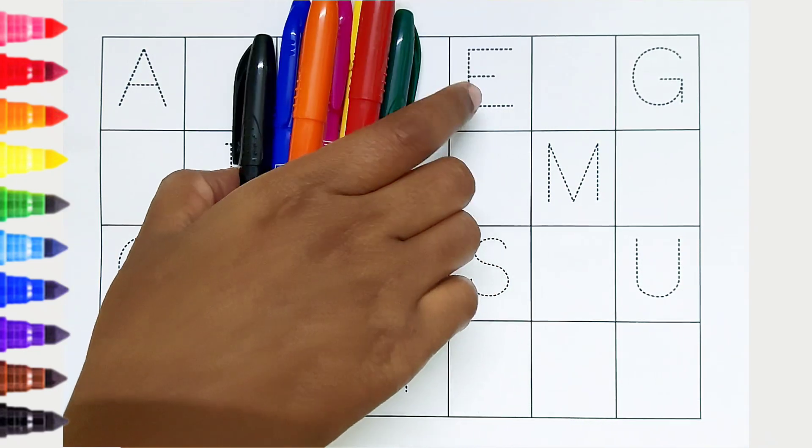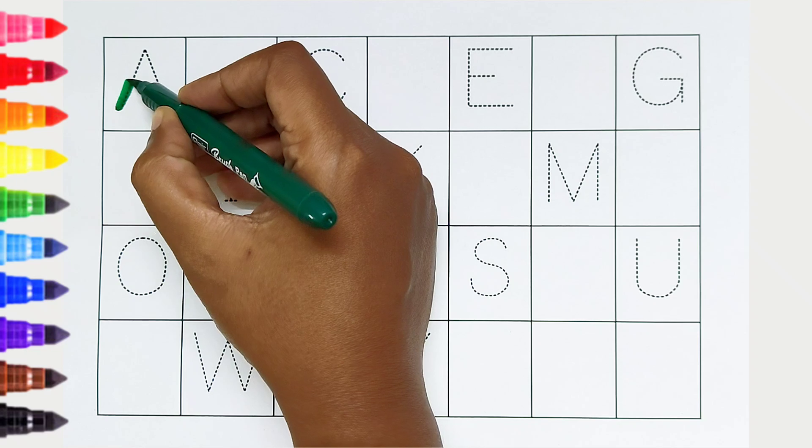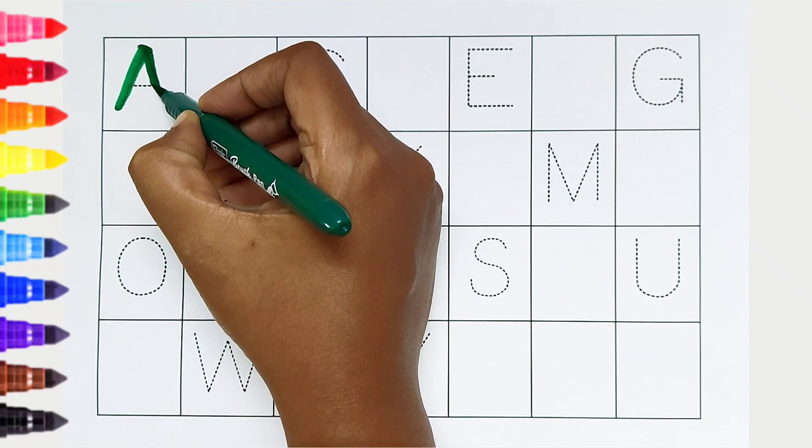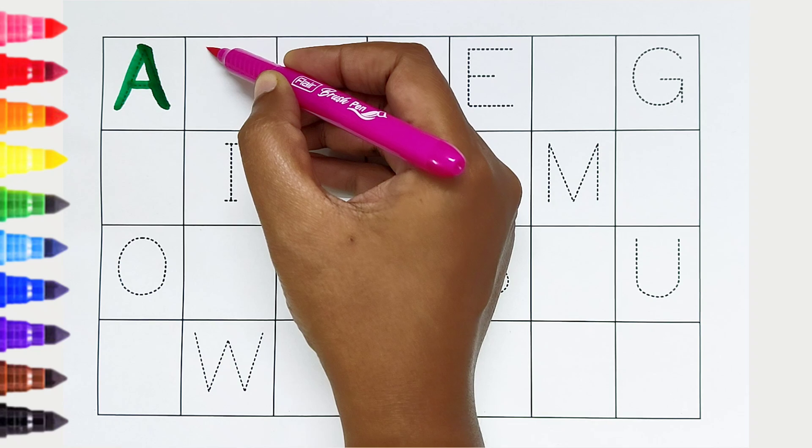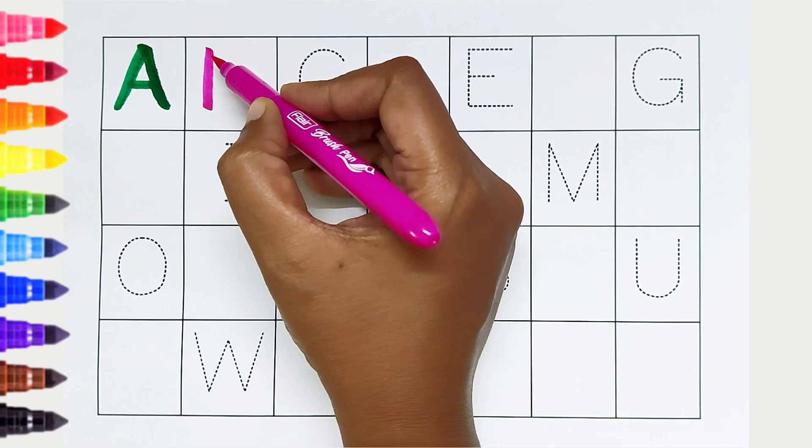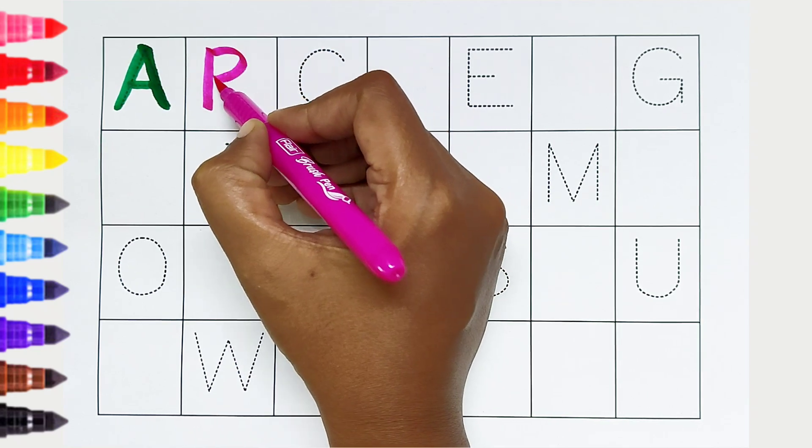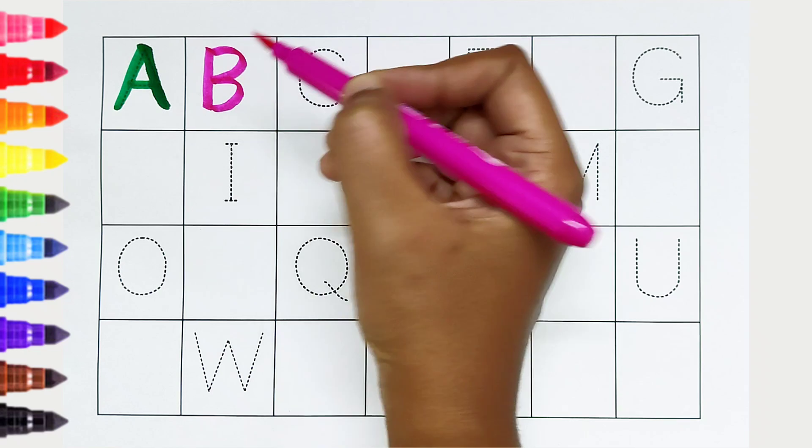Hi kids, today we can learn the alphabets from A to Z. A. Dark green color, A is for ant. B. Dark pink color, B is for buffalo.